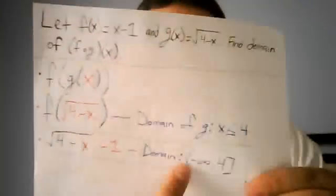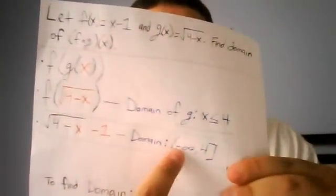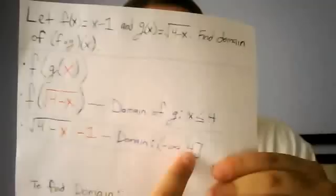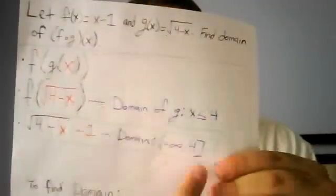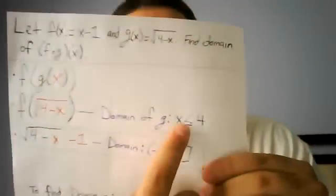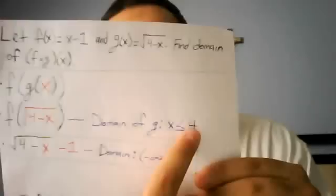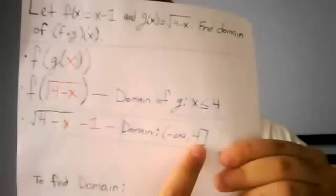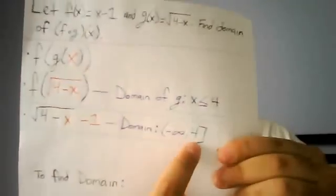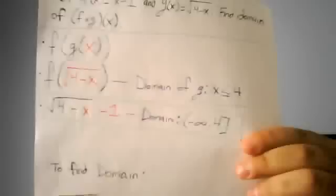So this isn't included because it's any number in this range all the way to positive 4. This is included because of the less than or equal to 4. So then you have to include the 4 here inside the domain. So here's your answer.